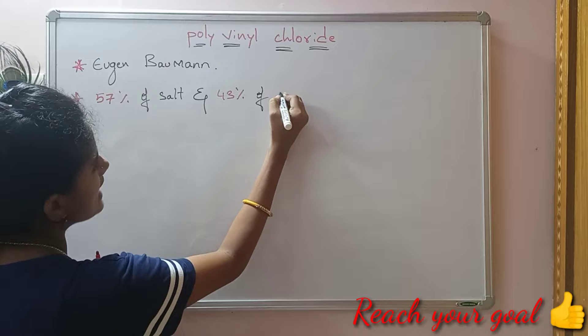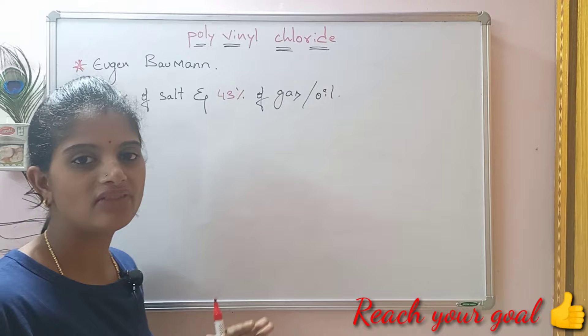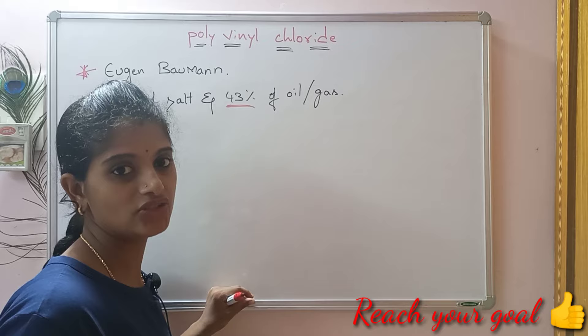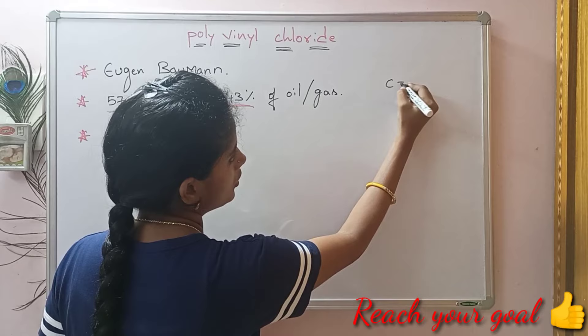Polyvinyl chloride was produced by polymerization of vinyl chloride monomer. What is the structure of vinyl chloride? We know the structure of ethylene. Ethylene — CH2 double bond CH2 — is the structure of ethylene.